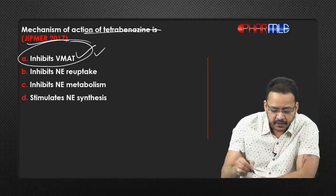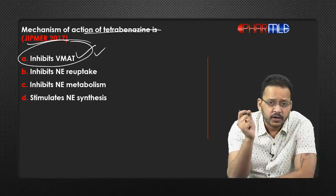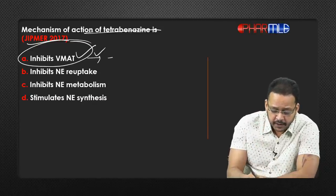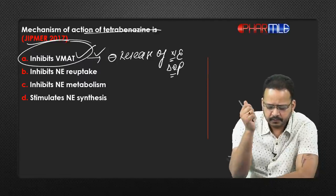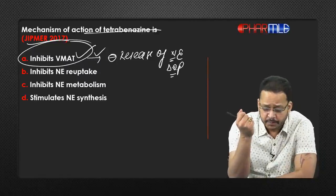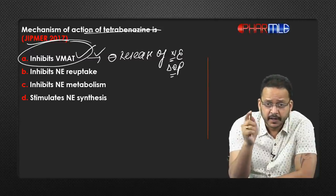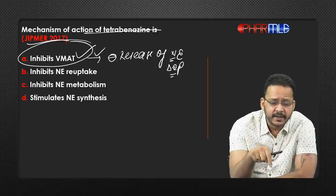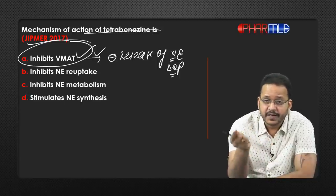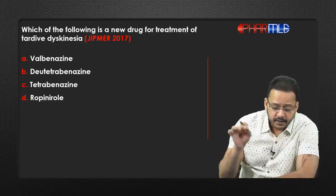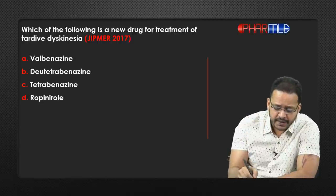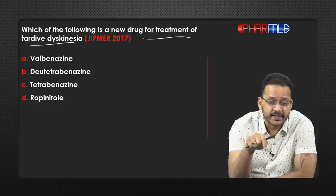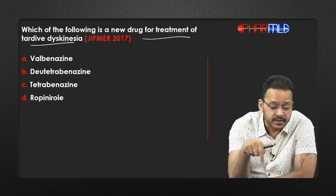Excellent — all of you are correct. Option A is the right answer. Tetrabenazine inhibits VMAT, or vesicular monoamine transporter. Inhibition of VMAT blocks release of norepinephrine as well as dopamine in different sections of the brain. In GIPMO 2017, they also asked another related question.